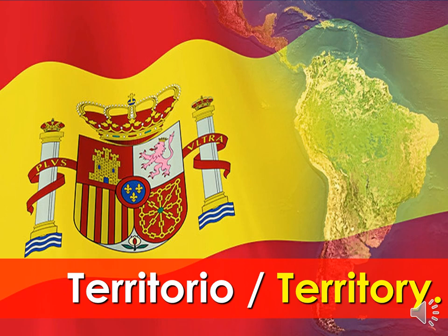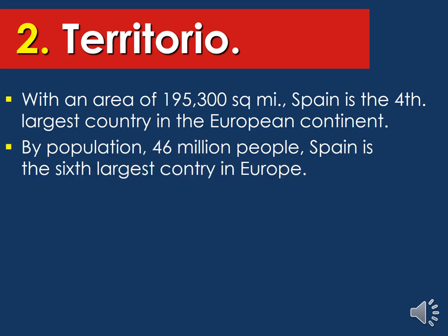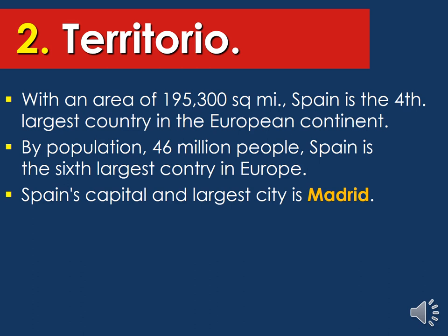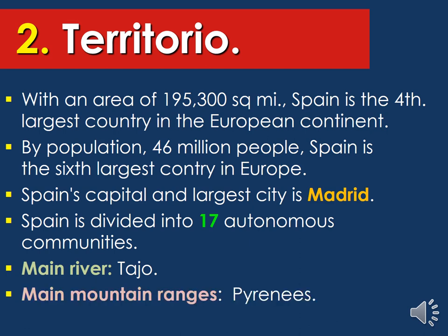The territory: with an area of 195,000 square miles, Spain is the fourth largest country in the European continent. By population, with 46 million people, Spain is the sixth largest country in Europe. Spain's capital and largest city is Madrid. Spain is divided into 17 autonomous communities — that means 17 autonomous states. They are in charge of making their own proper rules, but at the end they respond to the king. The main river is Tajo, and the main mountain range that divides Spain from France is called the Pirineos.